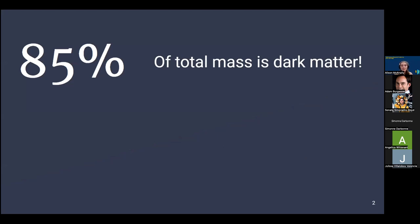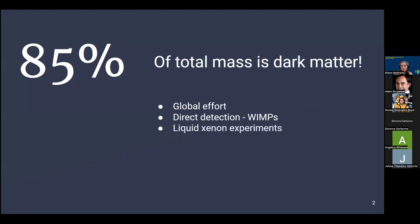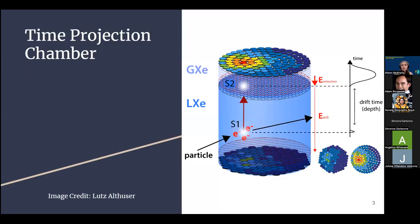Observational astronomy tells us that about 85% of the total mass-energy in the universe is a result of dark matter. This high percentage has gained intrigue across the globe, with countries from Japan to the US to Italy searching for answers. Some experiments look for weakly interacting massive particles, or WIMPs, directly. One common method is to use the stable element of xenon to find these particles. For the past few months, I have been working with the XENONnT collaboration based in LNGS in Italy.